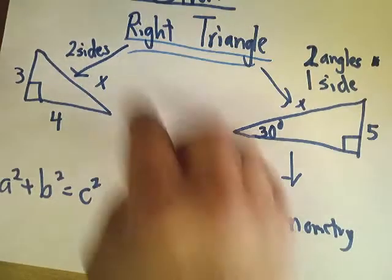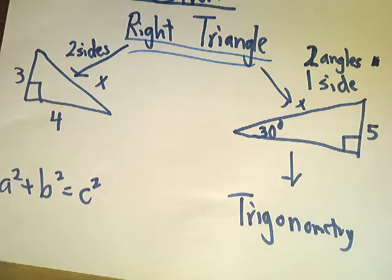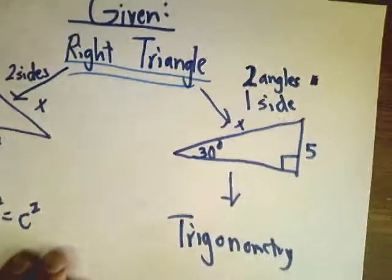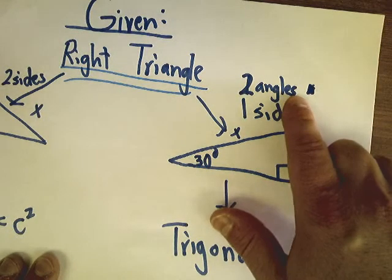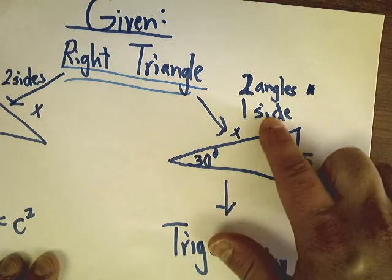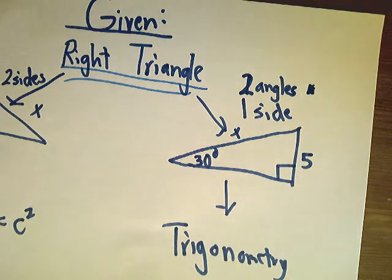What happens if we're given a right triangle and — by the way, both of these methods require a right triangle — what if I'm given two angles and one side? I can figure out the missing side using trigonometry under those conditions.